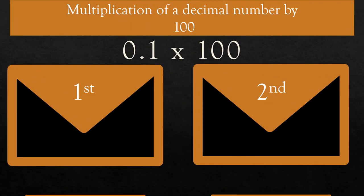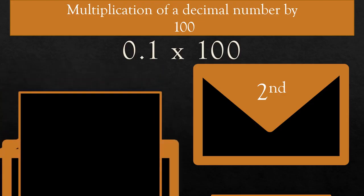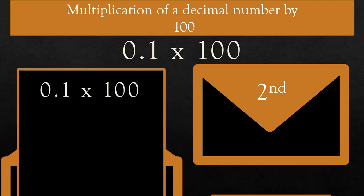For example, 0.1 × 100. There are two ways to solve this question. First way: if we multiply 0.1 × 100, the decimal point shifts two places to the right. Since there is only one digit, we will put a 0 and then a decimal. So count two digits from the right — 1, 2 — and put a decimal in the product. So the answer is 10.